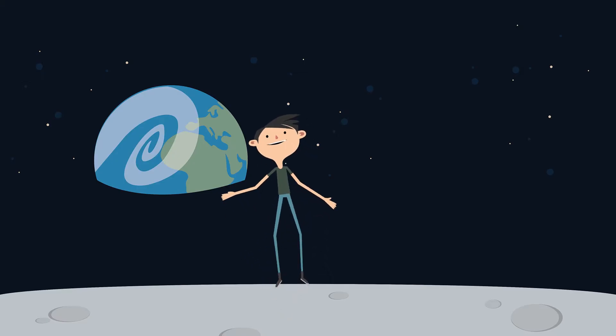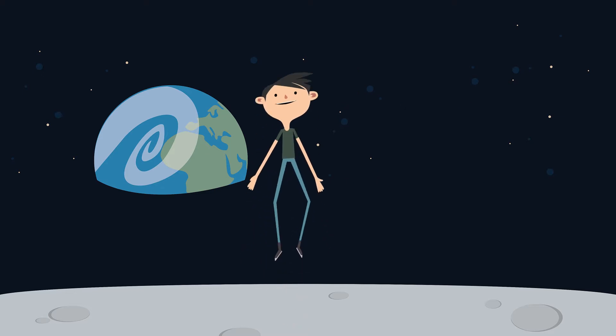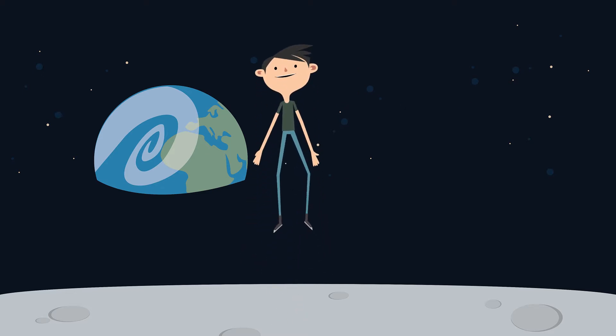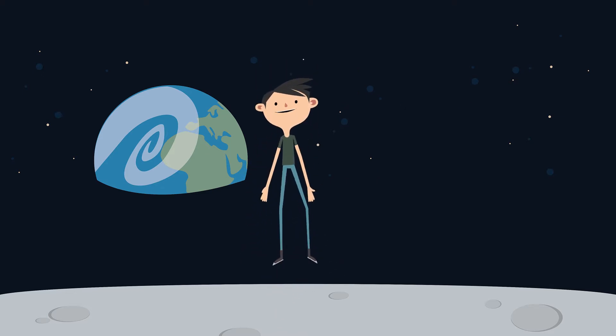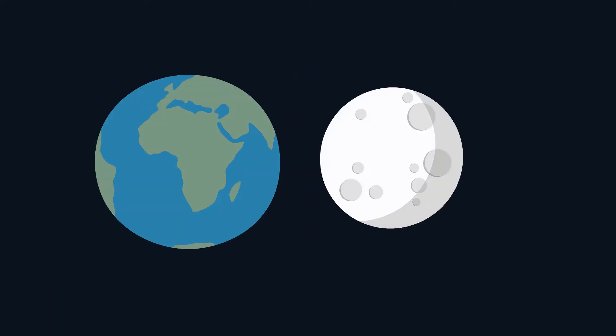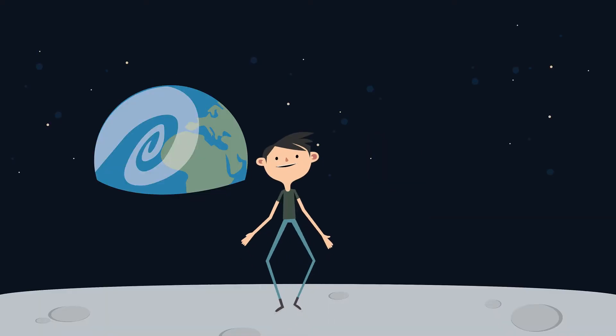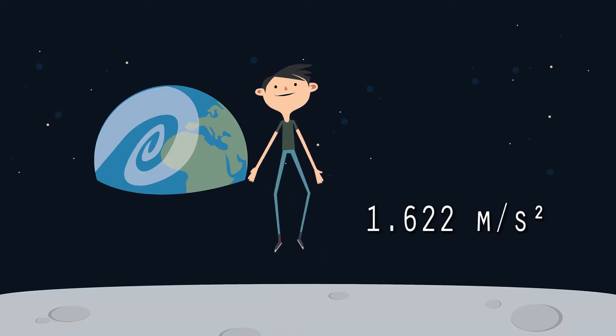Is it possible to jump from moon to earth? You may believe because of moon's weak gravity it may be possible, but unfortunately it's not. Moon is much smaller than earth, so moon's gravity is about one-sixth of Earth's gravity.